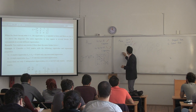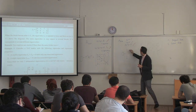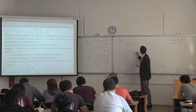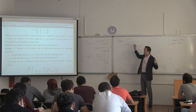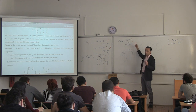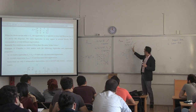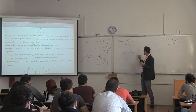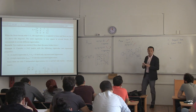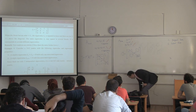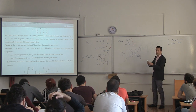Let's find the Jordan form. We have three independent eigenvectors, so three Jordan blocks. First block: eigenvalue three, not repeated — just a scalar three. Second block: eigenvalue four, not repeated — just four. Third block: eigenvalue five, repeated twice with both pointing in the same direction — so it's a 2x2 block with five, five on the diagonal and a one above it, zero below. Everything else is zeros.